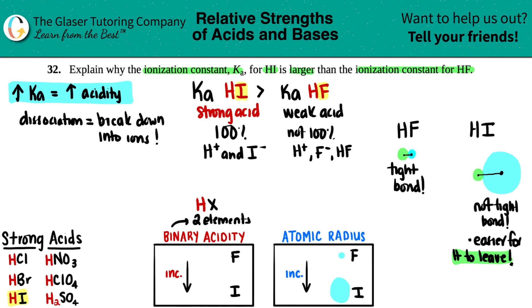And that all comes from the closeness of the atoms. The bigger the radius, the farther apart the hydrogen is going to be. And the iodine's like, eh, you can go. Goodbye.